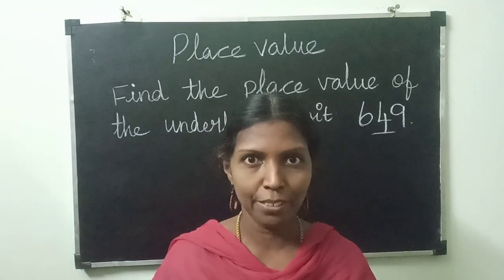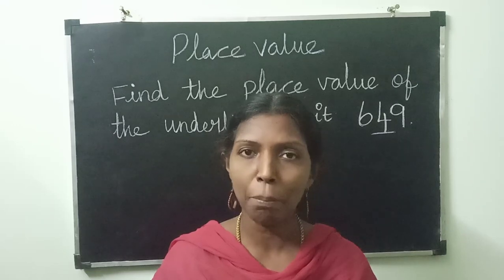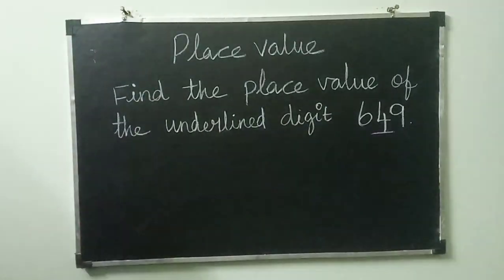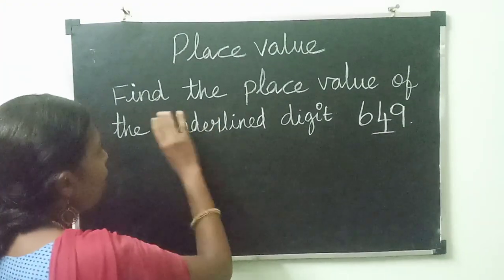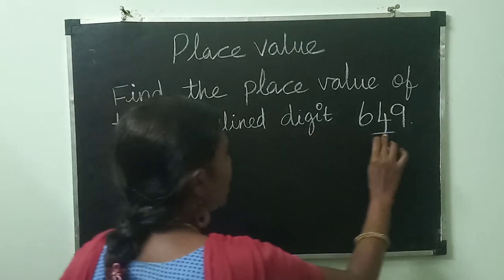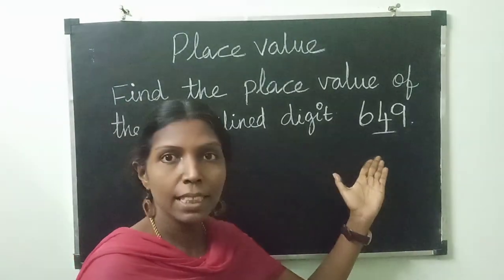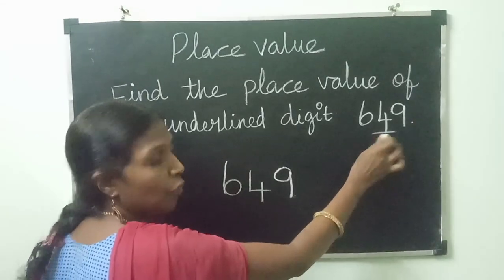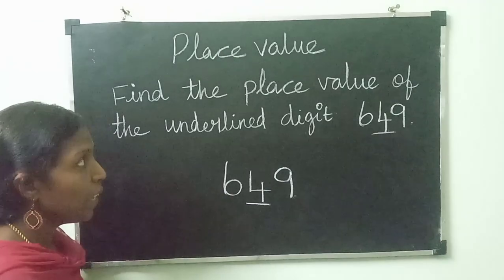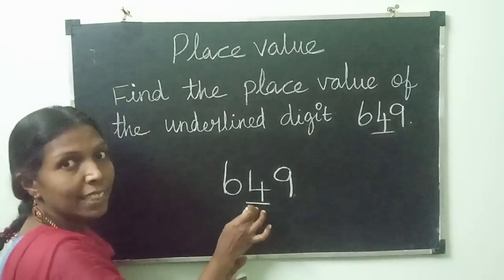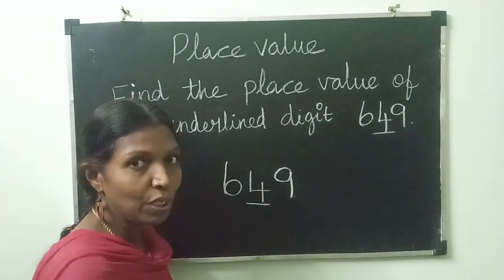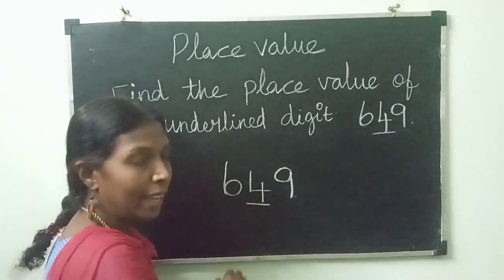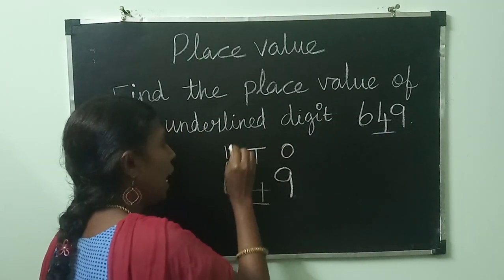Children, let us now see place value. The place value of a digit is determined by its position in the number. Let us see one problem: find the place value of the underlined digit in 649. The underlined digit is 4. First, we give each digit a place name from right to left — ones, tens, hundreds.